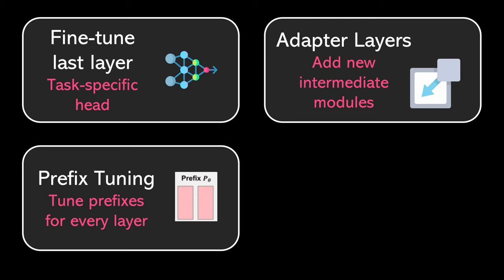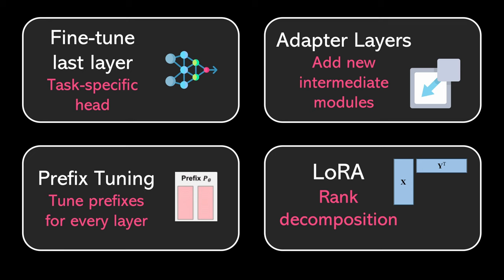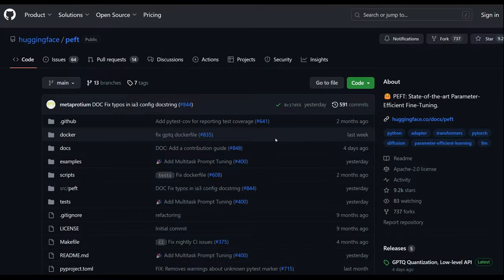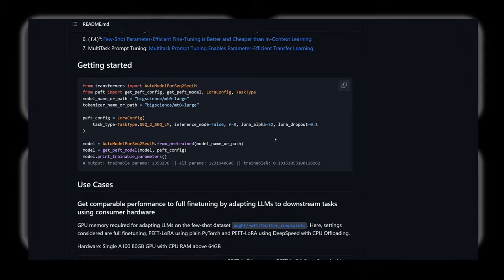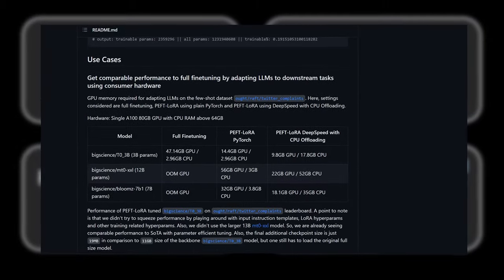This finally leads us to LoRa, the probably most commonly used fine-tuning approach, which we will discuss in more detail in the following minutes. It performs a rank decomposition on the updated weight matrices. Of course, there exist more techniques, and a great place to work with them is the Hugging Face library with implementations of parameter-efficient fine-tuning techniques, called PEFT. Later in this video, I will also give you a simple example.